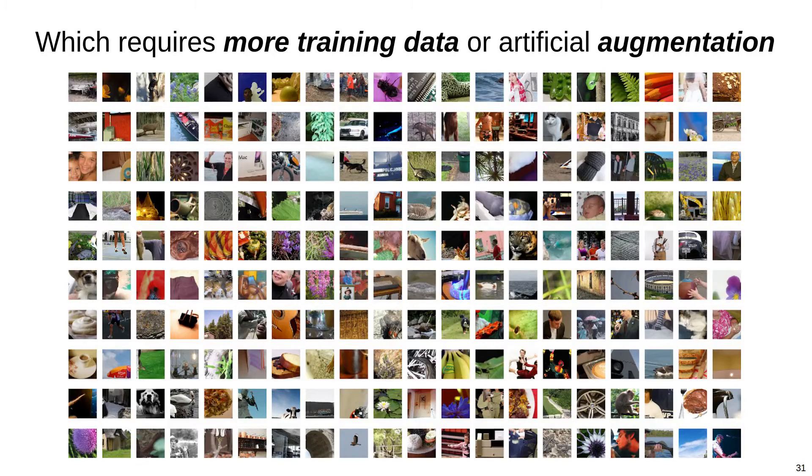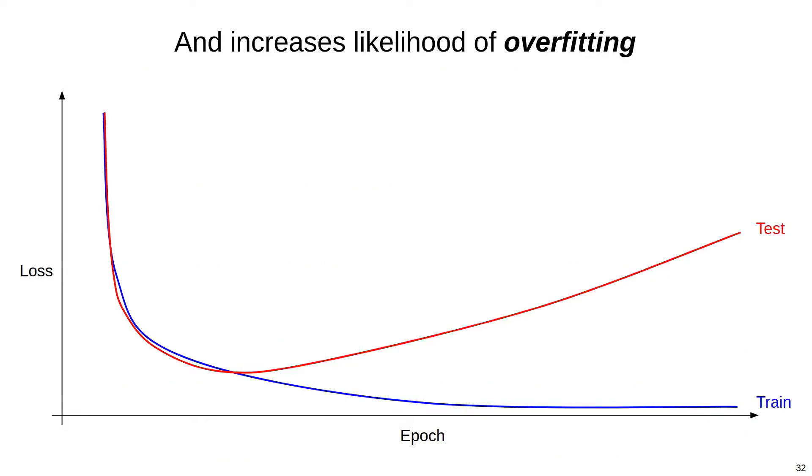Learning this kind of invariance requires complex networks and lots of training data, usually coupled with some form of artificial data augmentation. And all of this increases the likelihood that the network will overfit and fail to generalize.